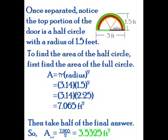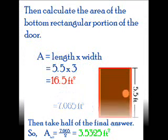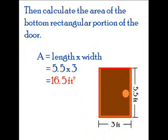Once separated, notice the top portion of the door is a half circle with a radius of 1.5 feet. To find the area of the half circle, first find the area of the full circle as shown, then take half the answer. Then calculate the area of the bottom rectangular portion of the door, as shown below.